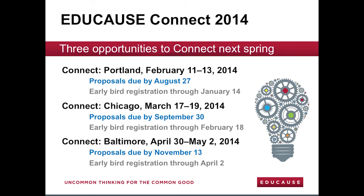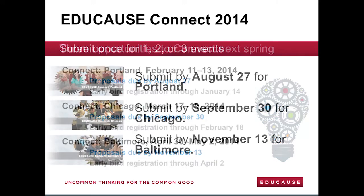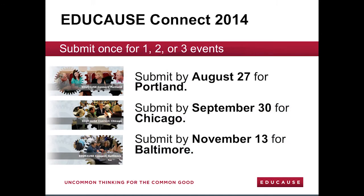There are three Educause Connect meetings: in Portland in February, Chicago in March, and Baltimore in April. Each has a separate registration, but they all use the same proposal submission form. The Educause Connect process is designed for ease and efficiency — you submit a proposal only once and select the Connect program or programs you're interested in attending.